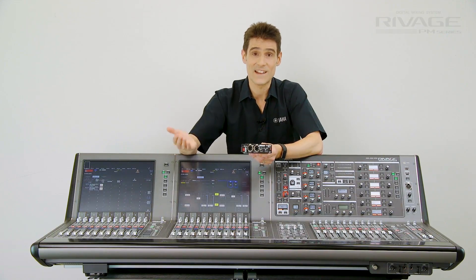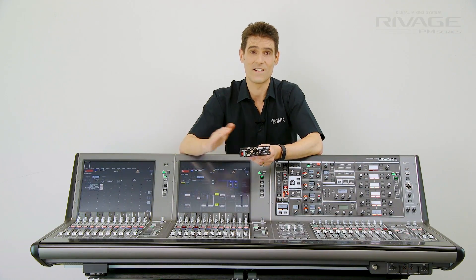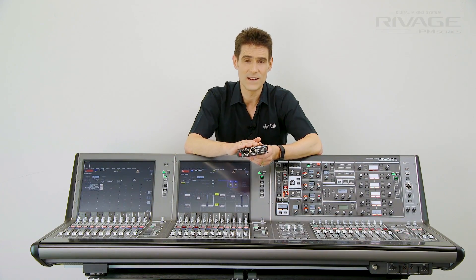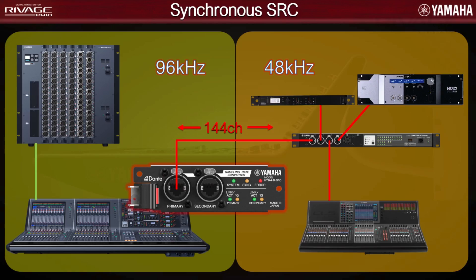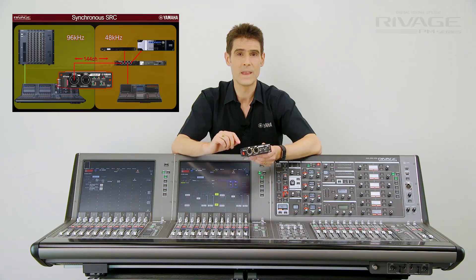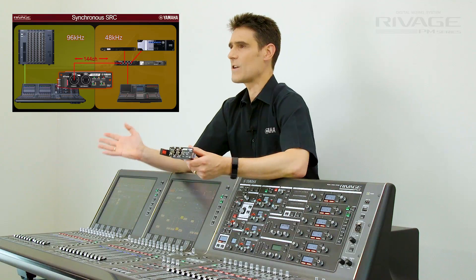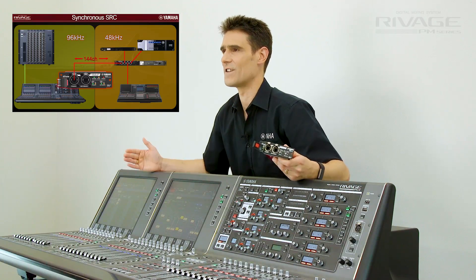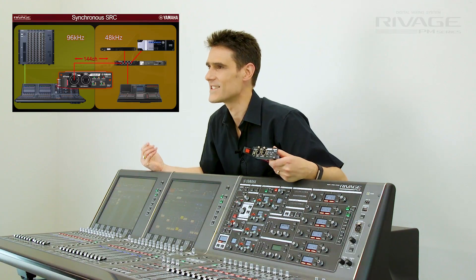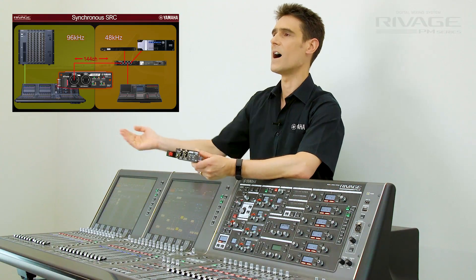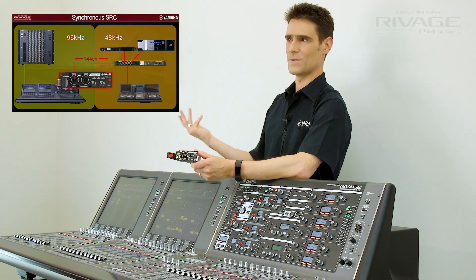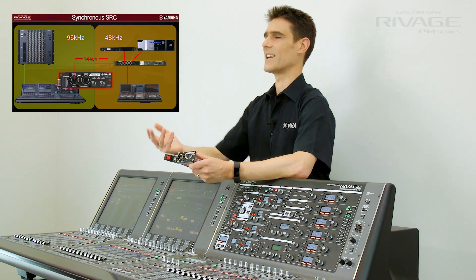Put it in synchronous SRC mode to have 144 channels in and out at exactly half the sample rate. This is a great way to keep RIVAGE at 96kHz while linking to other Dante equipment at 48kHz.